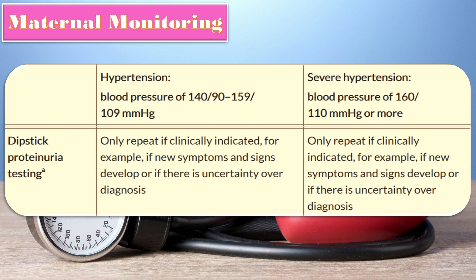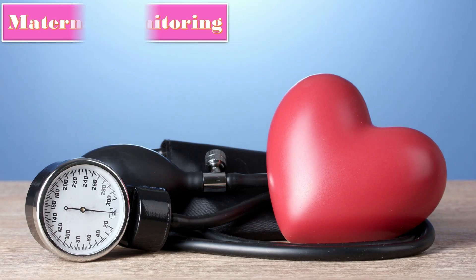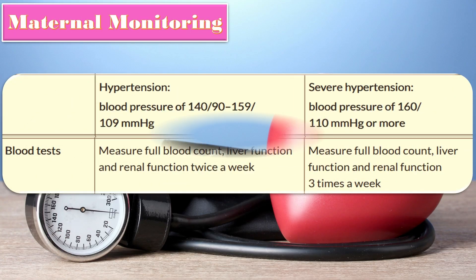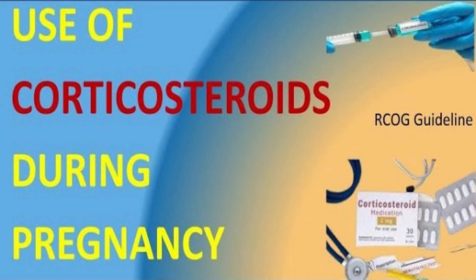In severe hypertension, perform dipstick proteinuria and repeat only if clinically indicated. For hypertension, measure full blood count, liver function tests, and renal function tests twice a week. For severe hypertension, measure these three times a week. Give steroid cover in the form of dexamethasone injection between 24 to 35 weeks for fetal lung maturity.